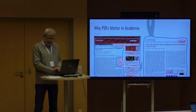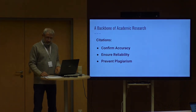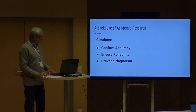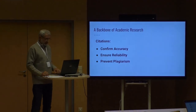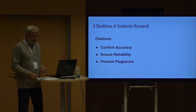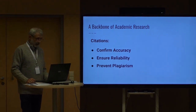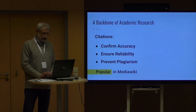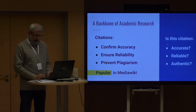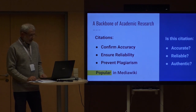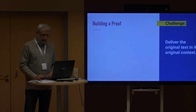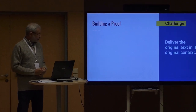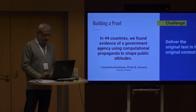For academic research, citations are a real backbone because they prove that ideas and conclusions are based on existing knowledge. Citations are very popular in Wikipedia and have great support in MediaWiki. But who can say that a citation itself is accurate, reliable, has valid credentials and the right context? An obvious solution is to provide a way to deliver the original text in its original context through the citation node.